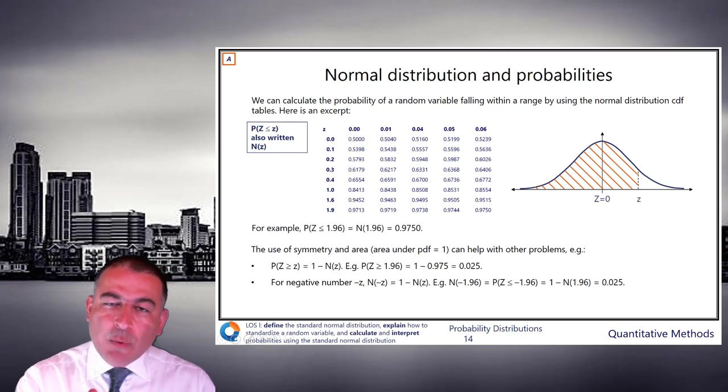So, for example, if z equals 0, what is the CDF at 0? What is the probability that our random variable, which is normally distributed, is to the left of 0? Answer? 0.5.